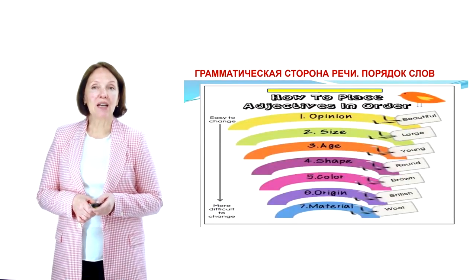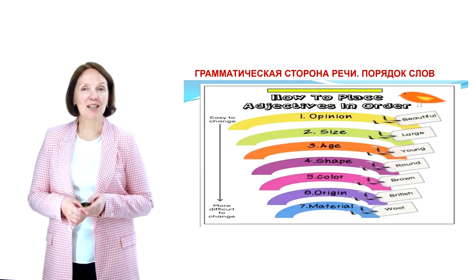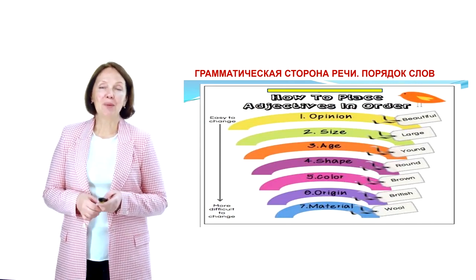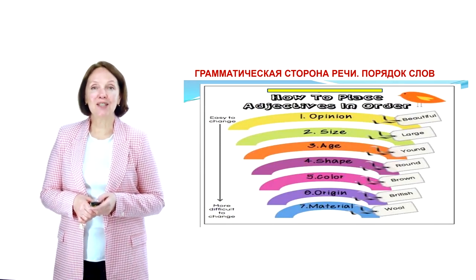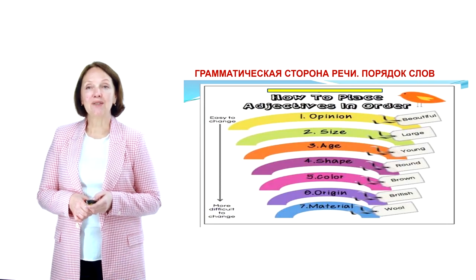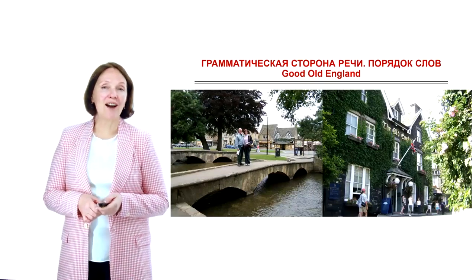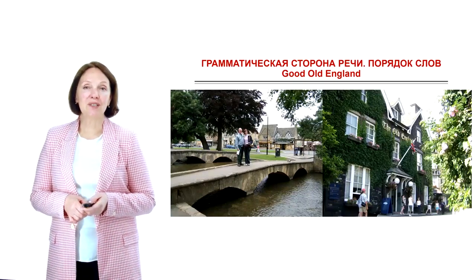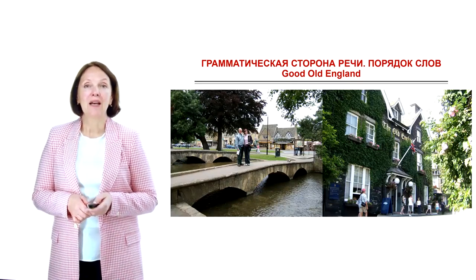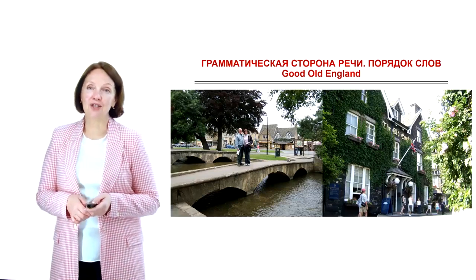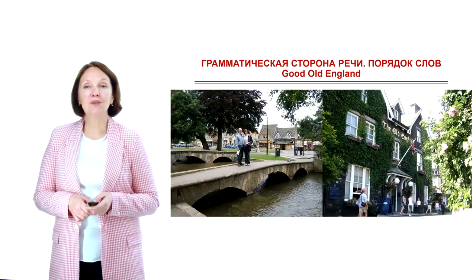Логическая схема для запоминания такая: от тех слов, которые легко изменить — они стоят в начале. Opinion adjectives — вы знаете, мнение может меняться, как погода. А в конце — материал происхождения, который трудно или невозможно изменить. Так что известное выражение «старая добрая Англия» будет звучать в английском варианте отнюдь не Old Good England, а Good Old England. Так как мнение на первом месте — good, а фактическое прилагательное — на втором месте. Итак, Good Old England. Будьте внимательны.